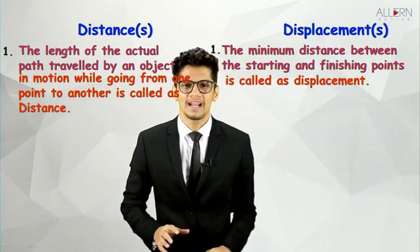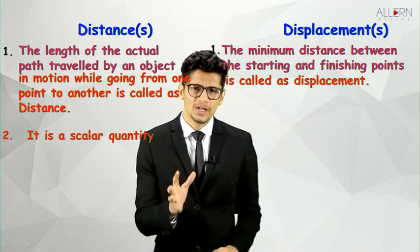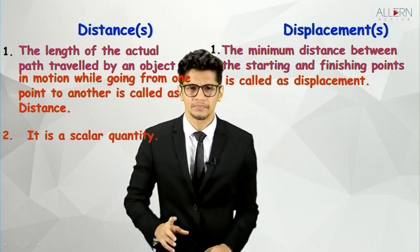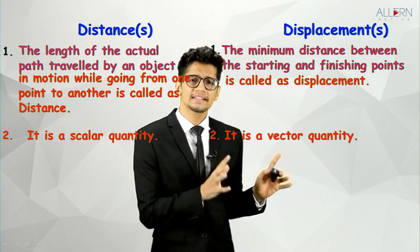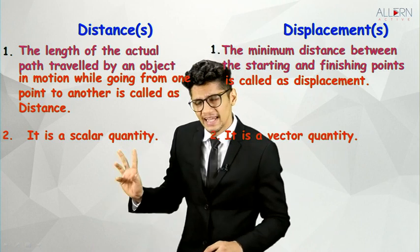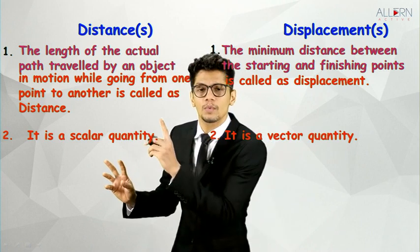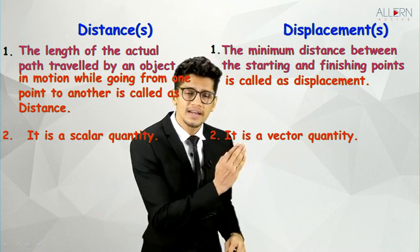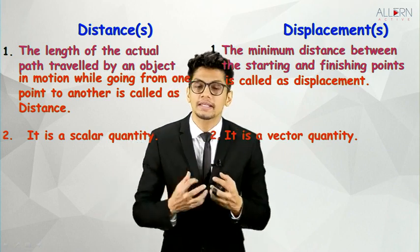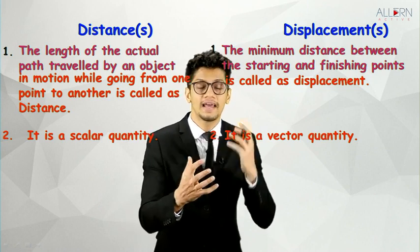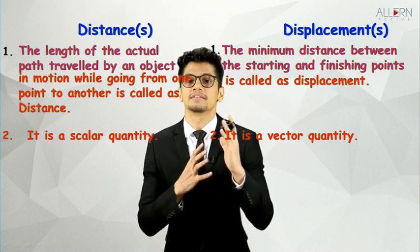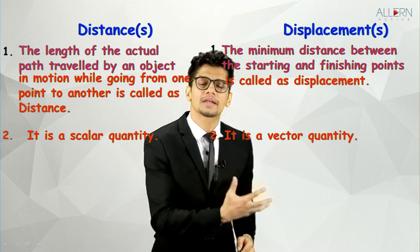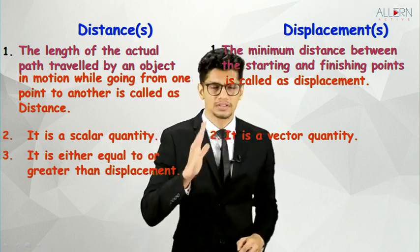Now let's move to the second point. Distance is a scalar quantity, and displacement is a vector quantity. Scalar quantity means it requires only magnitude for its description. A vector quantity requires both magnitude and direction. So distance is a scalar quantity and displacement is a vector quantity.